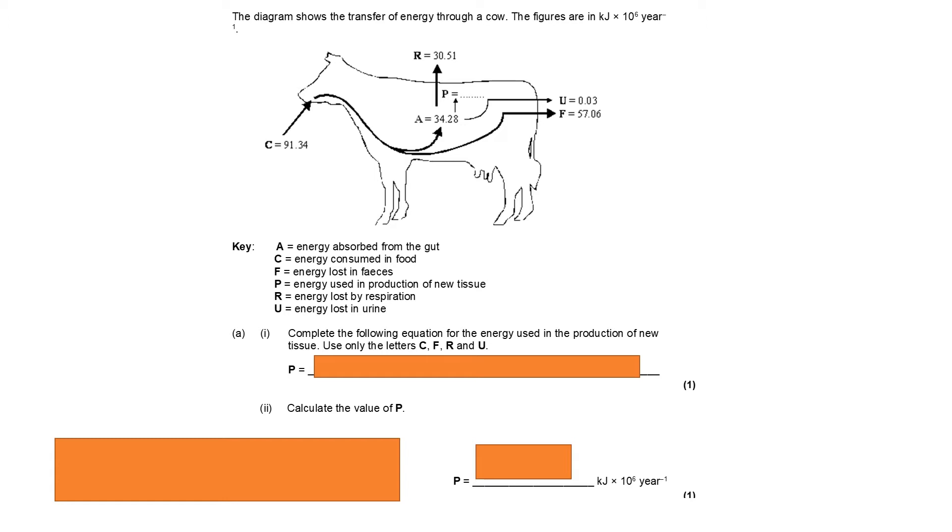P, energy used in production of new tissue. R, energy lost by respiration. And U, energy lost in urine.